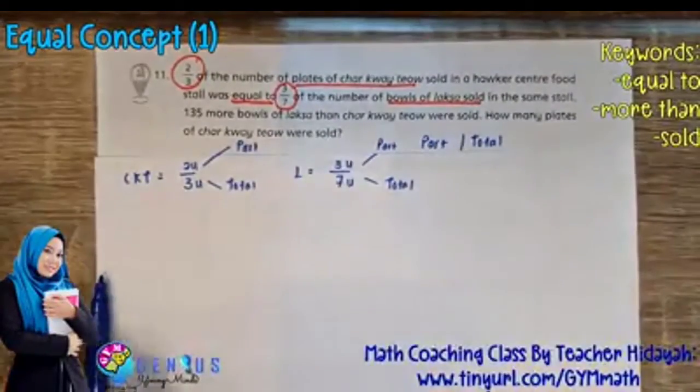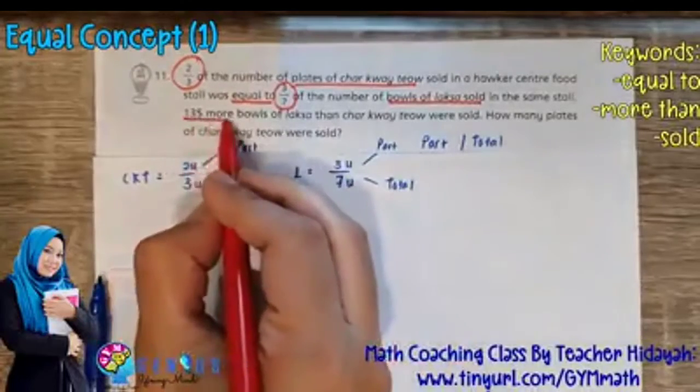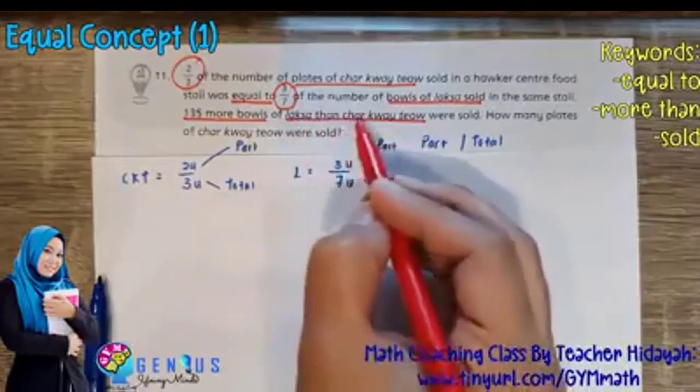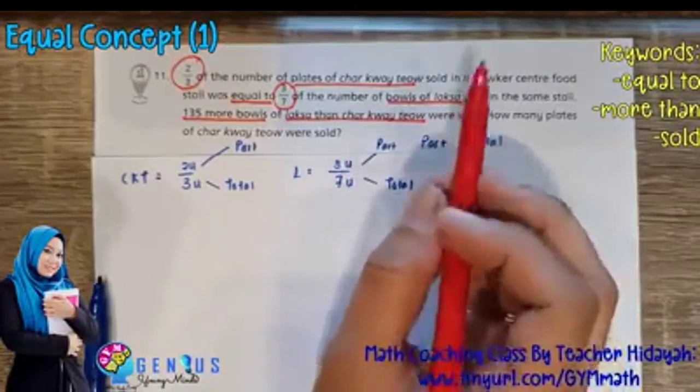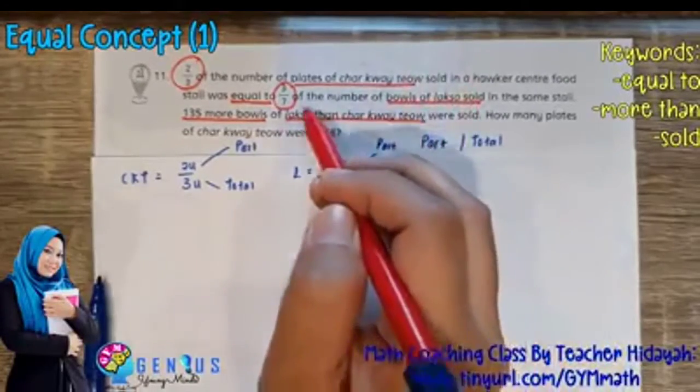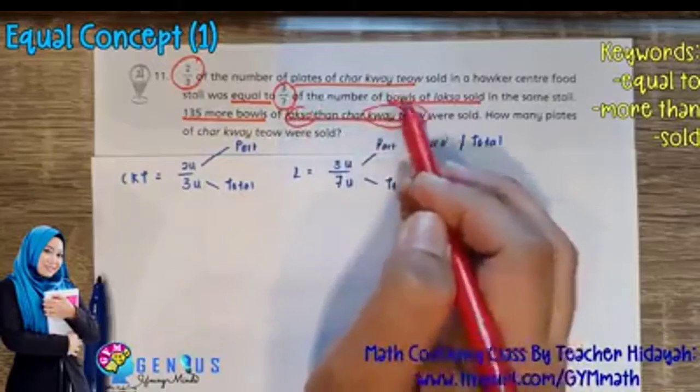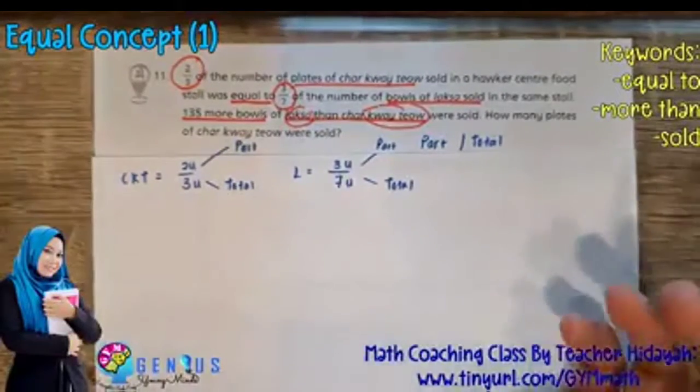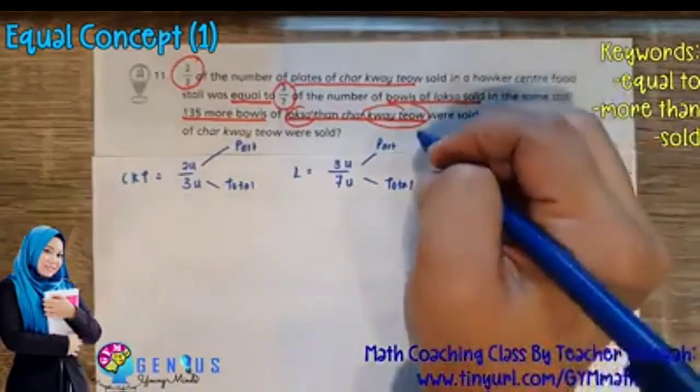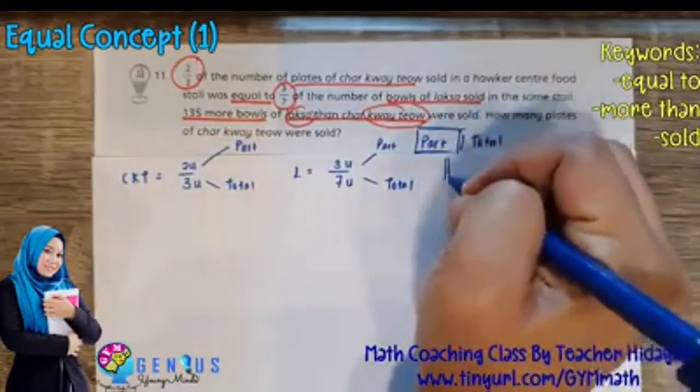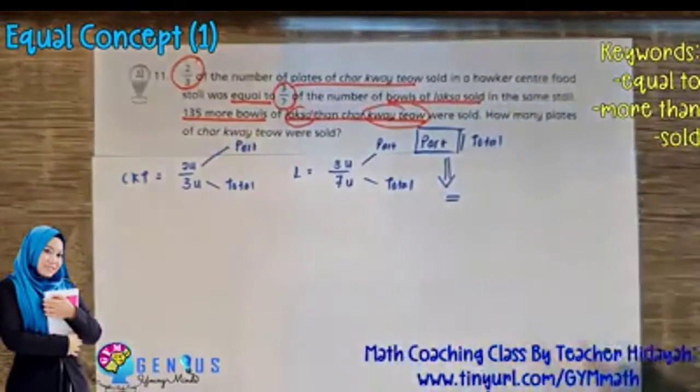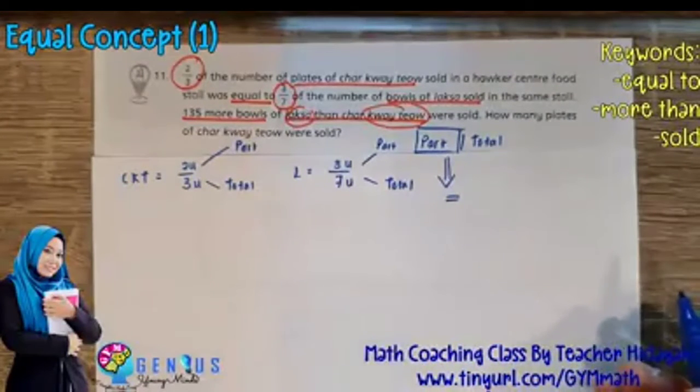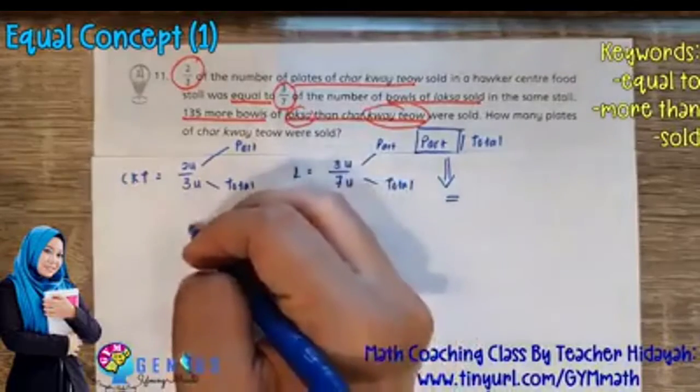And then if you look at the question, we also have 135 more bowls of Laksa than Cha Kuei Tiao. We are comparing the total number of Laksa and Cha Kuei Tiao. So what do we do here? For equal concept, you have to know that the part must be equal. So we are going to draw out the equal concept box. So this is how it looks like.